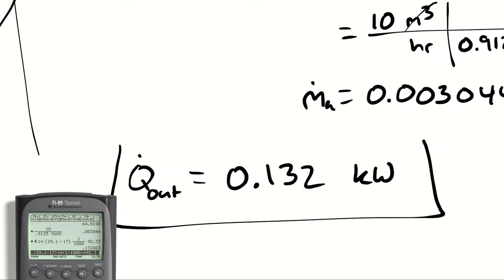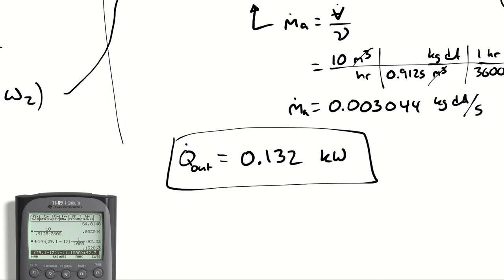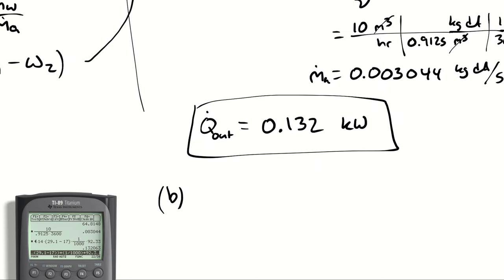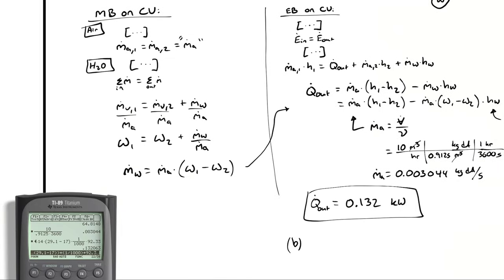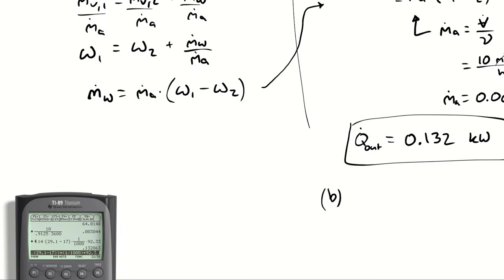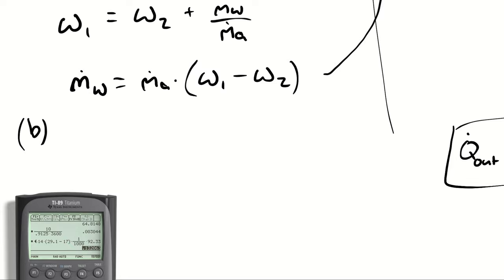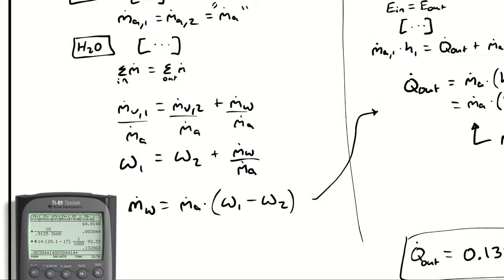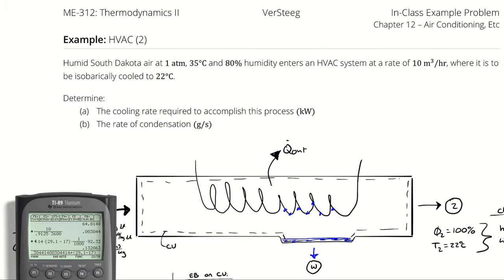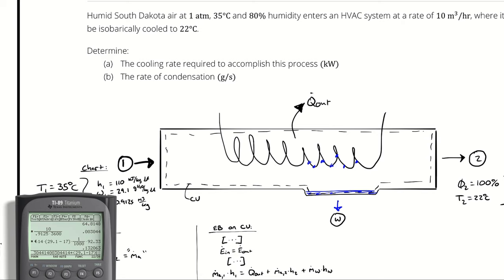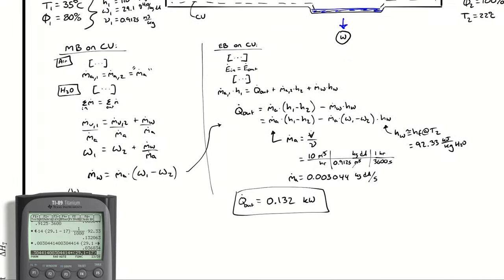For part B, calculating the mass flow rate of water: take ṁ_A times (ω₁ minus ω₂). That's kilograms of air per second multiplied by grams of water per kilogram of dry air, yielding grams of water per second. The answer is 0.0368 grams of water per second.